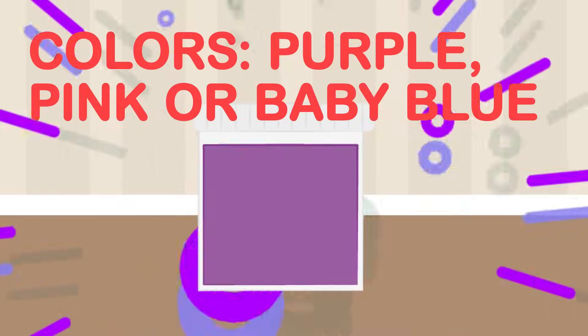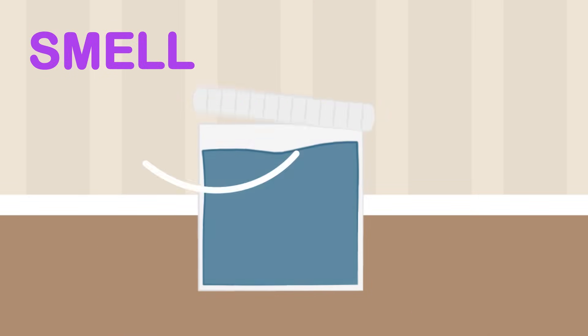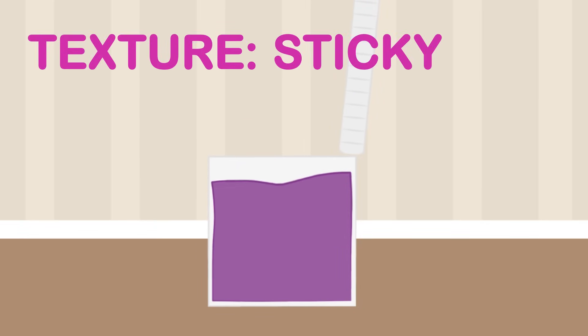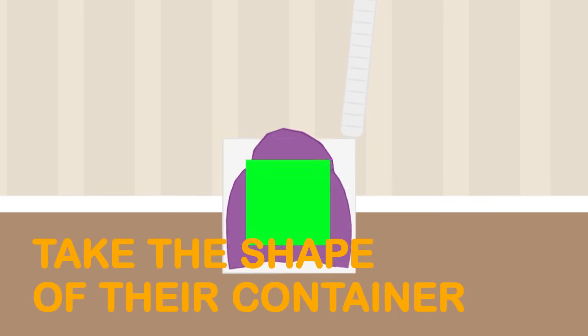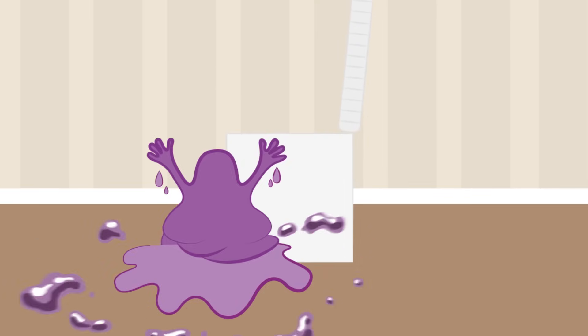For example, slime. Everyone loves playing with slime, right? Slime can have different colors like purple, pink, or baby blue. They have smells — some slimes smell different from other slimes. They also have texture; they're sticky. But they don't have their own shape. That's why when you put them in a square container, they just fill the square. But when you take them out, they're not square, right?